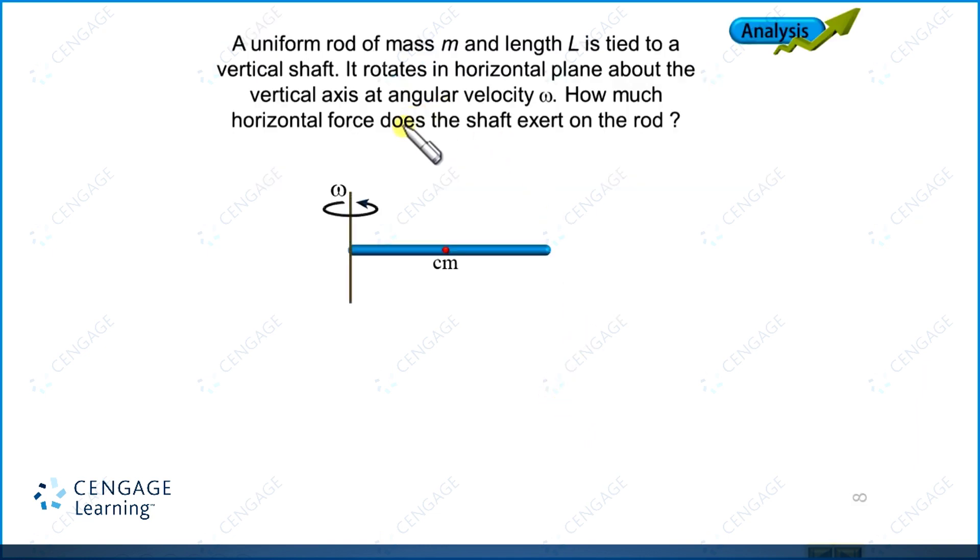Our requirement is to calculate force exerted by shaft on the rod. For making a free body diagram, we need to isolate shaft and rod. That's why we are going to select the rod as a system. Let us find what are the external forces acting on the system. As we have considered this as a gravity-free space, we don't need to bother about the weight of the rod. The external force will only be the force exerted by shaft on the rod.